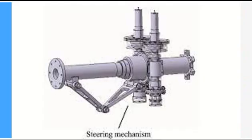Steering System of Landing Gear. Most aircraft have steerable nose wheels. Nose wheel steering provides a means of directional control when the aircraft is taxiing, during takeoff, and on landing roll. Certain conditions must be present for nose wheel steering to operate: there must be DC electrical power, hydraulic pressure, and the ground safety switch must be closed.